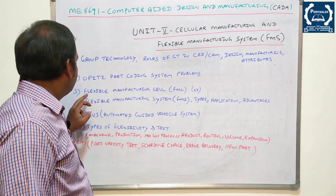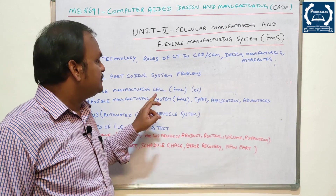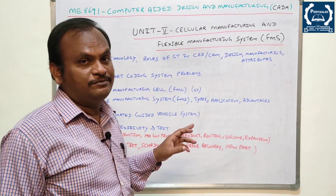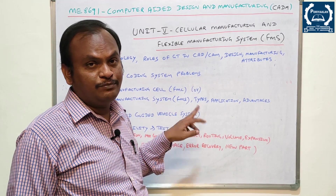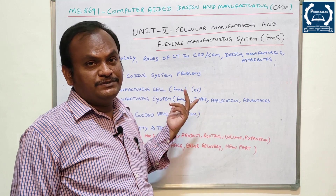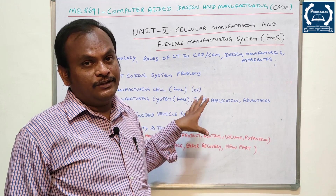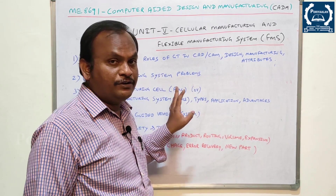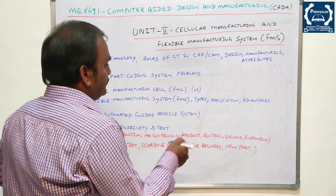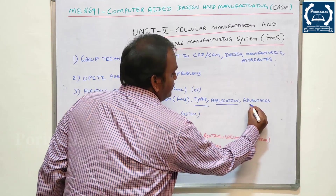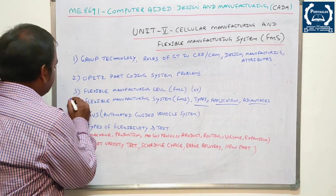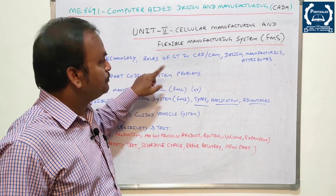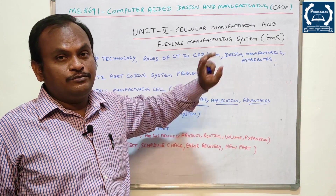The third question is Flexible Manufacturing Cell (FMC) or FMS — Flexible Manufacturing System. FMC and FMS are the same concept. FMS covers types, applications, and advantages. Group Technology also covers types, manufacturing attributes, and applications. The important questions in Unit 5 are Group Technology and FMS — these are very repeated questions.